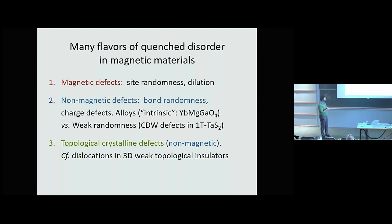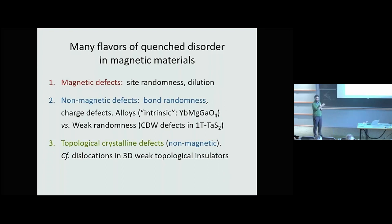Why would we want to talk about crystalline defects? In 3D weak topological insulators, dislocation lines carry gapless modes, giving something very interesting. It's not as obvious what they'll do in magnets, but I'll argue for something interesting. In this talk, I'll focus on categories 2 and 3 — non-magnetic bond randomness and crystalline defects — and skip the harder case of magnetic defects.